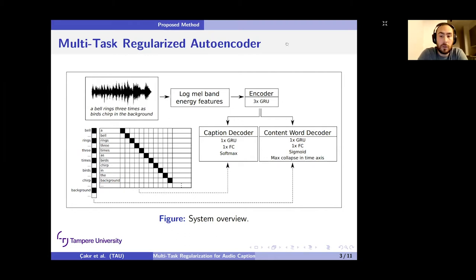And in the content word decoder, which we will talk about in more detail in the next slide, the content word decoder output will be another matrix, but it will be a multi-label vector. So it can have multiple ones in this binary vector. We will be marking each content word that's present regardless of its time step, marking all of them in a single vector. So here we see bell, rings, three, times, chirp, background as the target output.